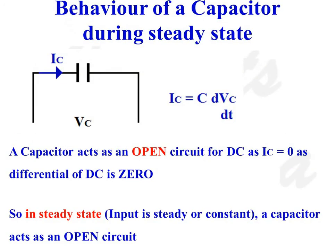Behavior of a capacitor during steady state: We know that current flow through a capacitance is given as IC = C · dVc/dt. So when voltage across the capacitance is constant, dVc/dt is equal to zero, which means current flow through a capacitance is equal to zero. In other words, in steady state, a capacitor acts as an open circuit.